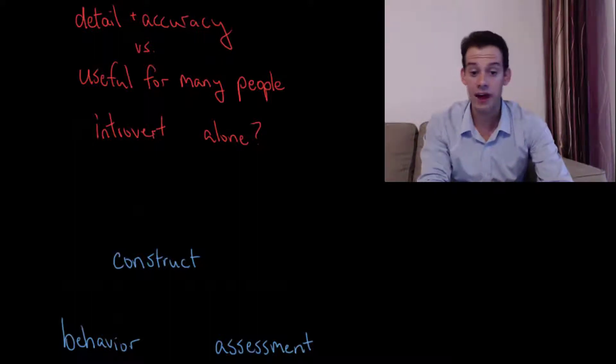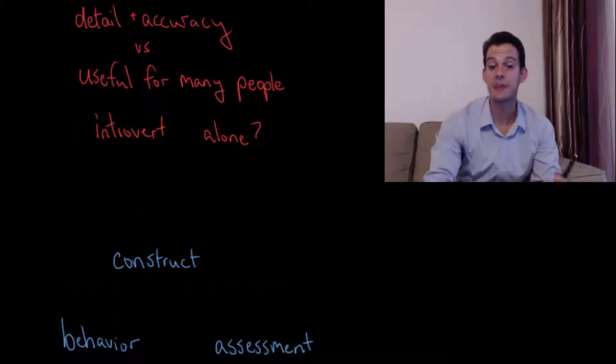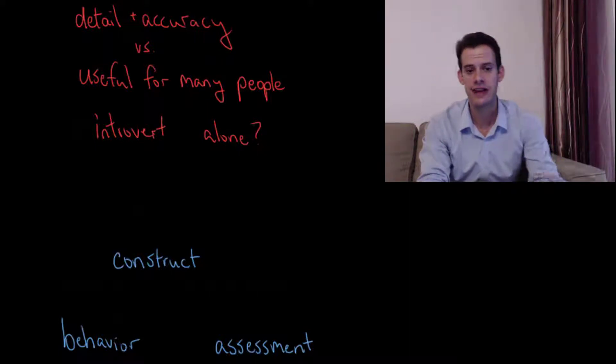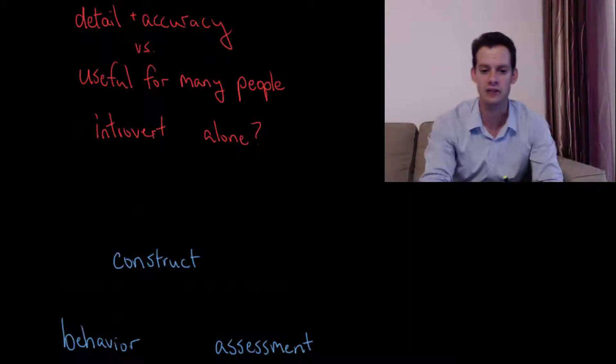This is a hypothetical property that we think exists and it's going to be connected to particular behaviors, that's why we think it exists. So in the case of intelligence, intelligence was the construct, and we thought, well there's things like grades in school that we see, and those make us think that there's differences in intelligence. And then we also design assessments like IQ tests.